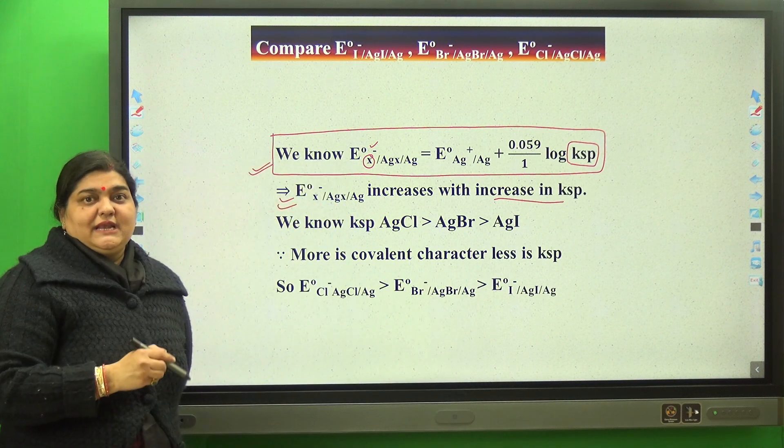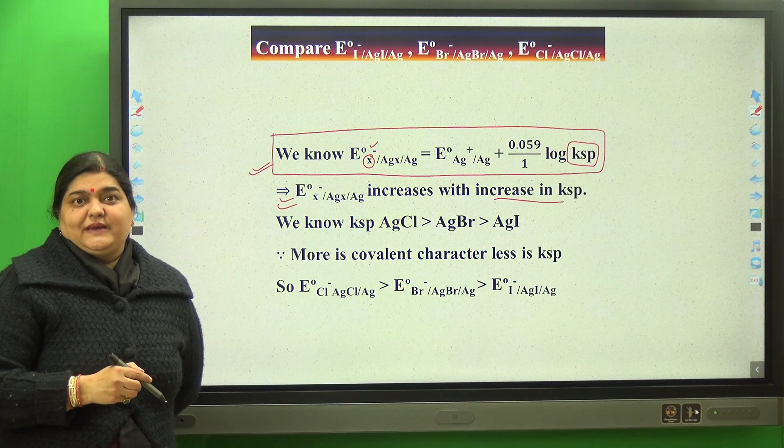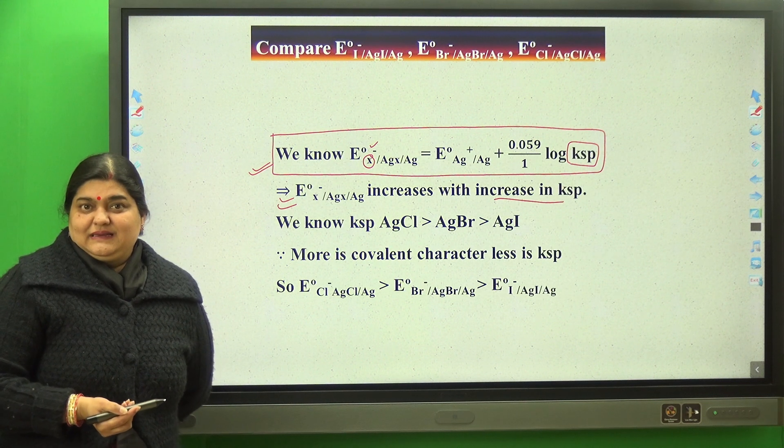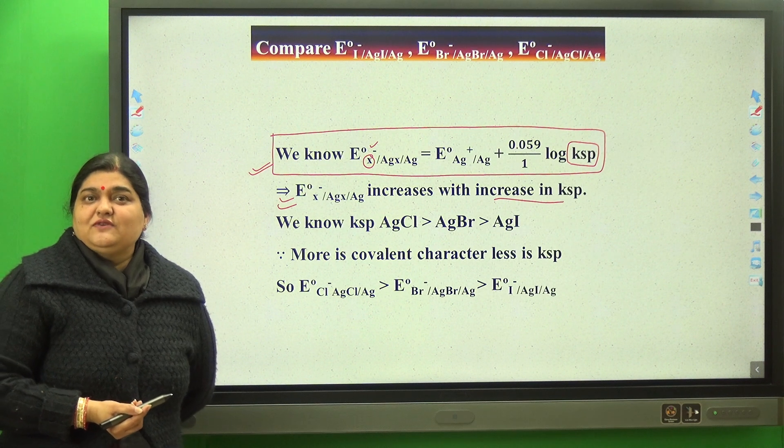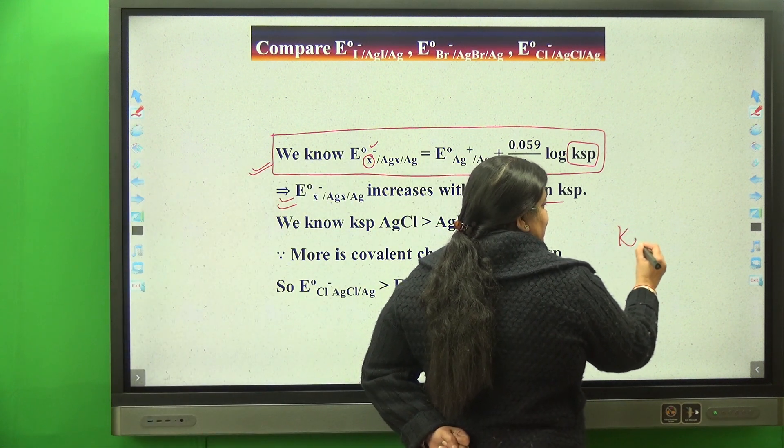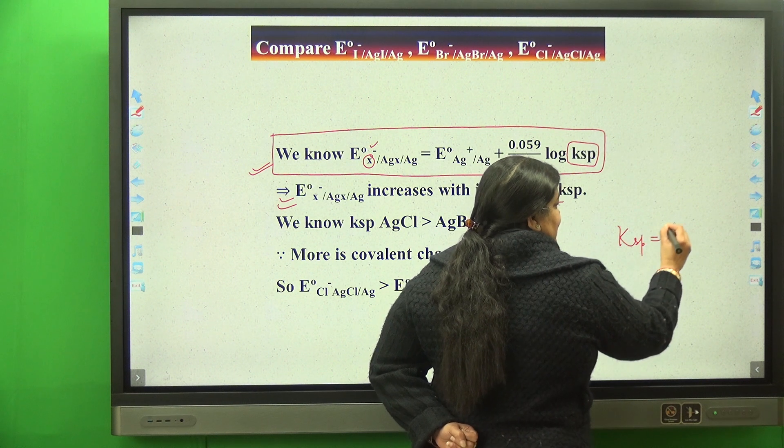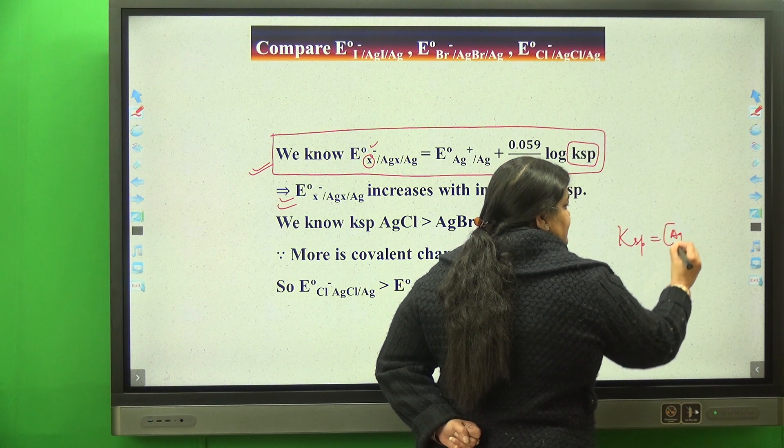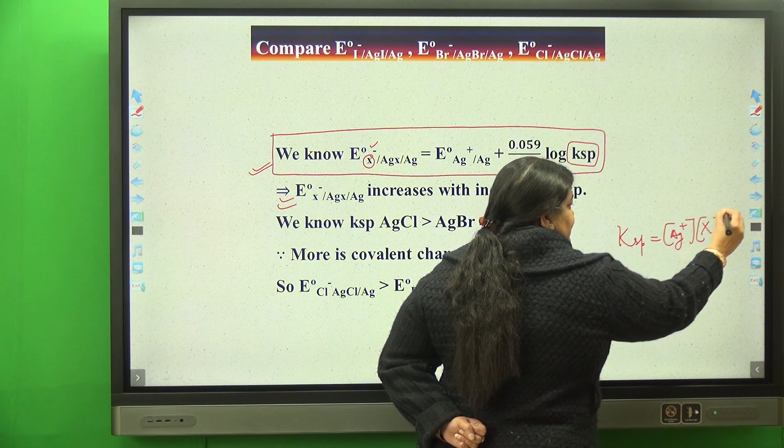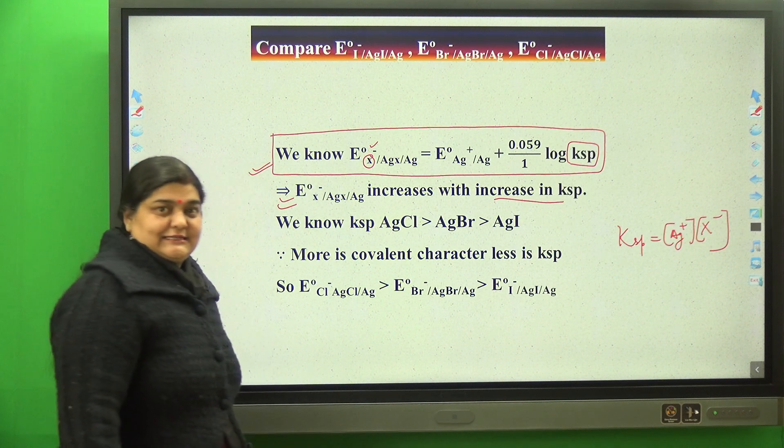Now let's correlate solubility product with chemical bonding. What is KSP? KSP is the product of its ions in saturated state. Let's consider AgX salt—when its saturation point is achieved, it's the product of its ions in saturated state.